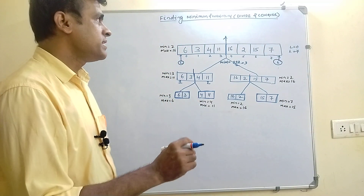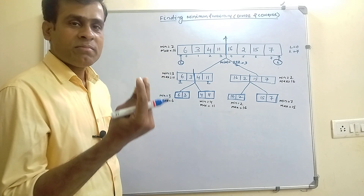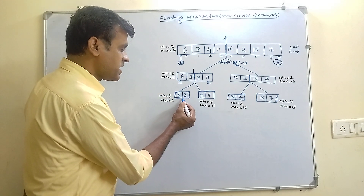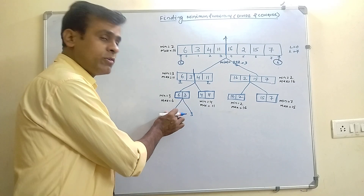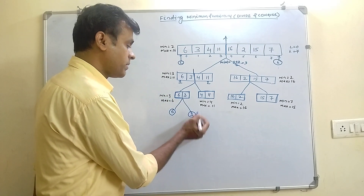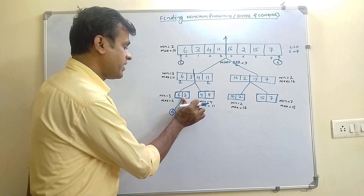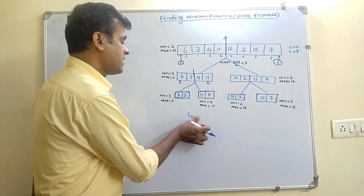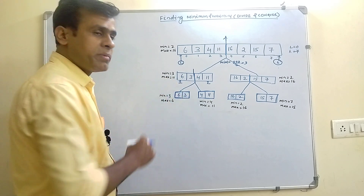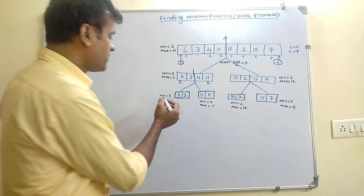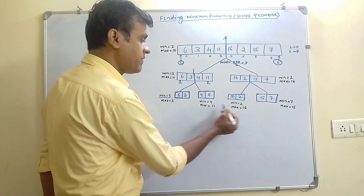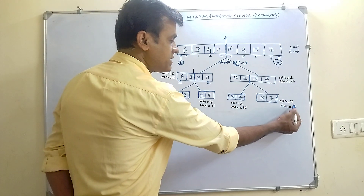Now I check my problem: I need to find the minimum and maximum. If the number of elements is 2, one will be the minimum and one will be the maximum. In this case we will not go for further division. So for 6 and 3, min is 3 and max is 6. For 4 and 11, min is 4 and max is 11. For 16 and 2, min is 2 and max is 16. For 15 and 7, min is 7 and max is 15.